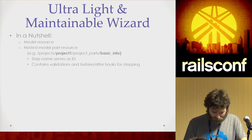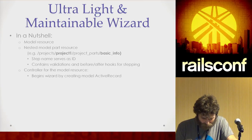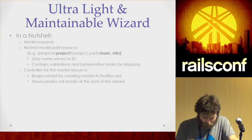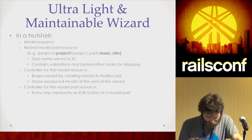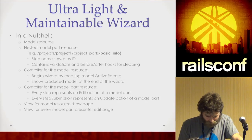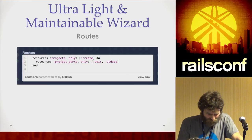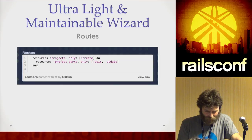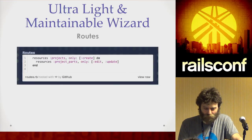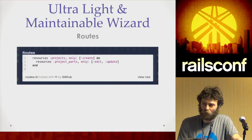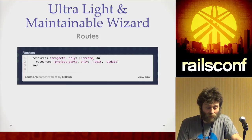So you've got step name, serving as ID, containing validations. The routes are very simple — you just have a resources projects. It's actually only create and show — there should be a show as well, which shows you the landing page of the project when you finish the wizard. And then project parts, which is edit and update. That simple.